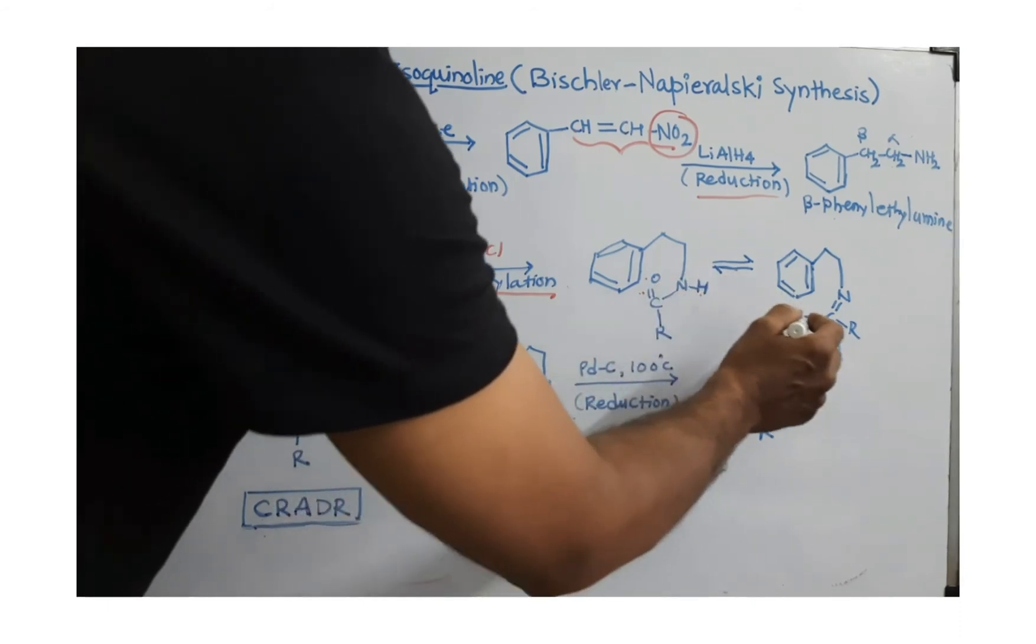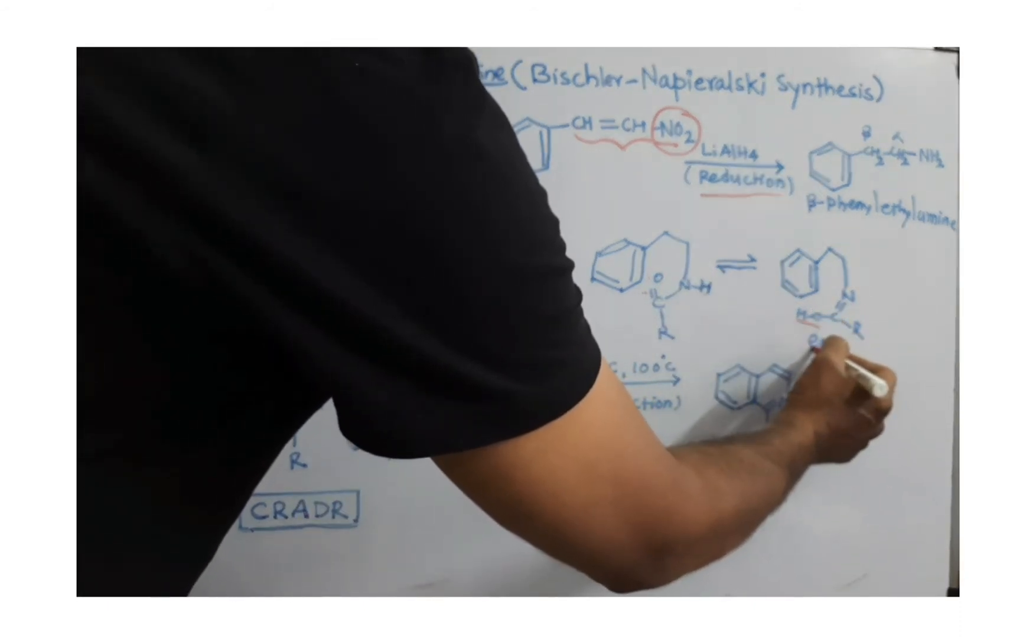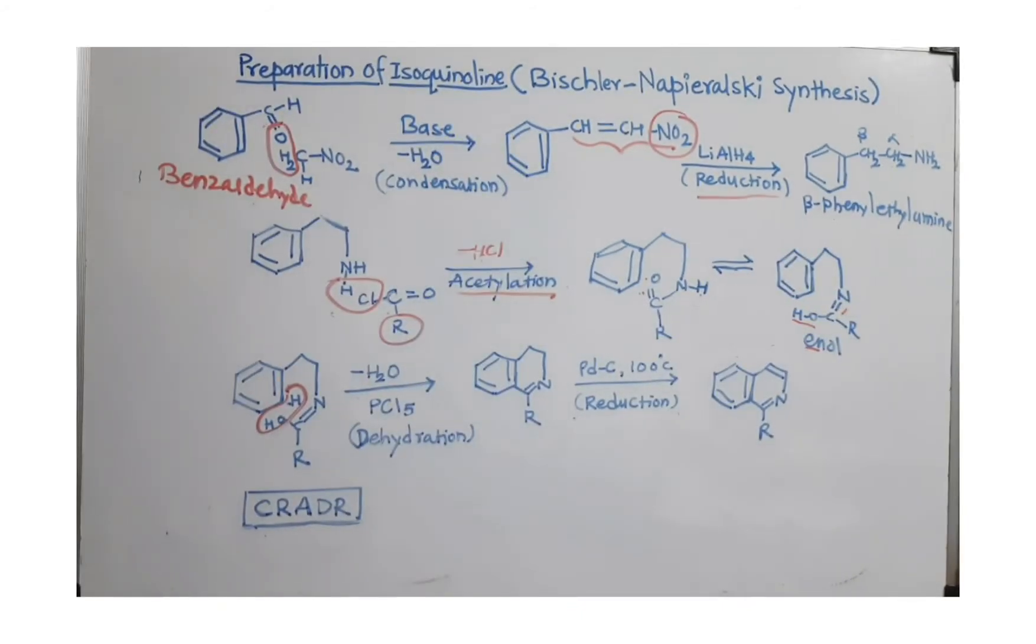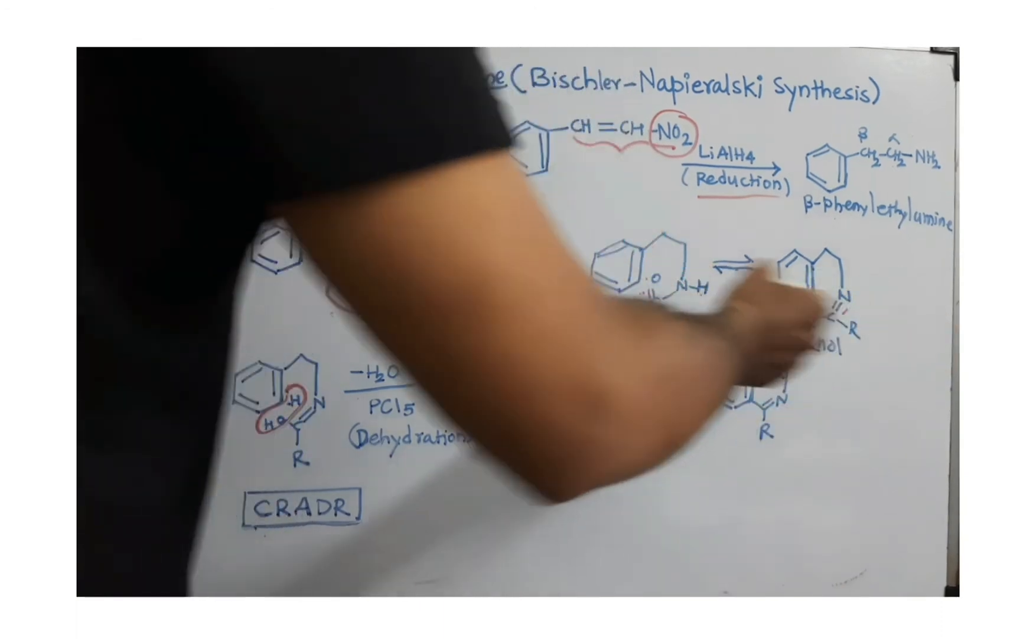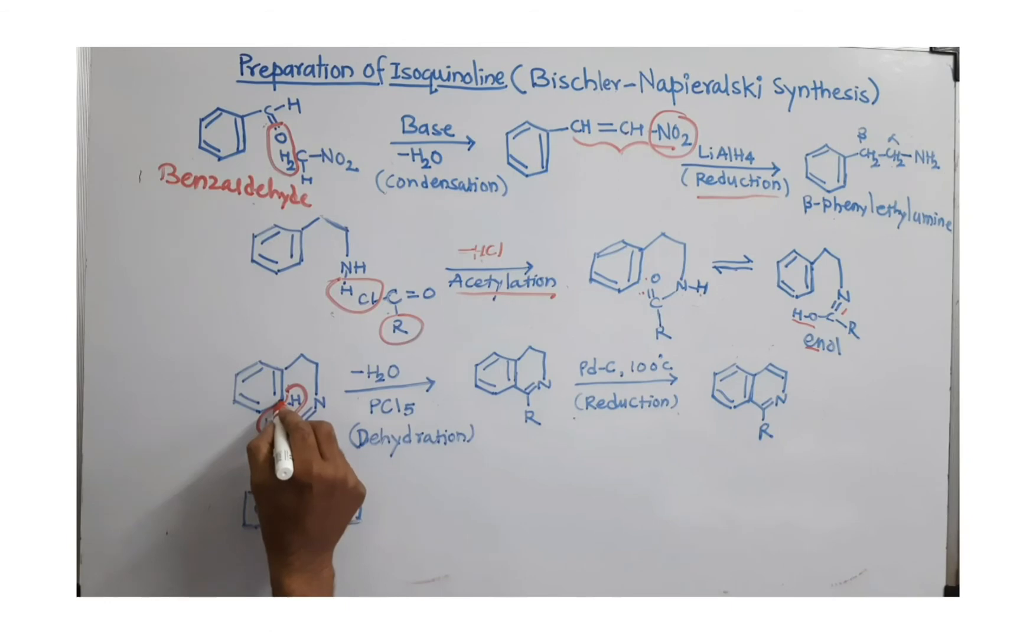So, putting there double bond, we get enol. Enol means what? Double bond as well as OH. Double bond as well as OH is enol. So, this is converted to enol. Because from this enol, we have to form a cycle. That is very easy. Now, OH is taken from this benzene ring. And OH is taken from this enol.